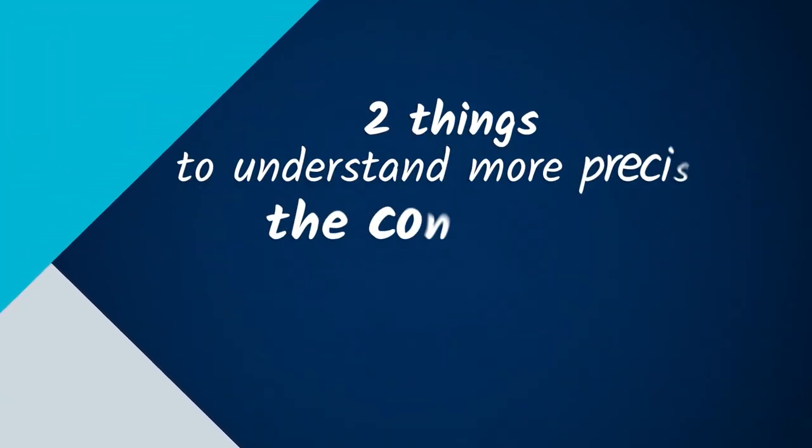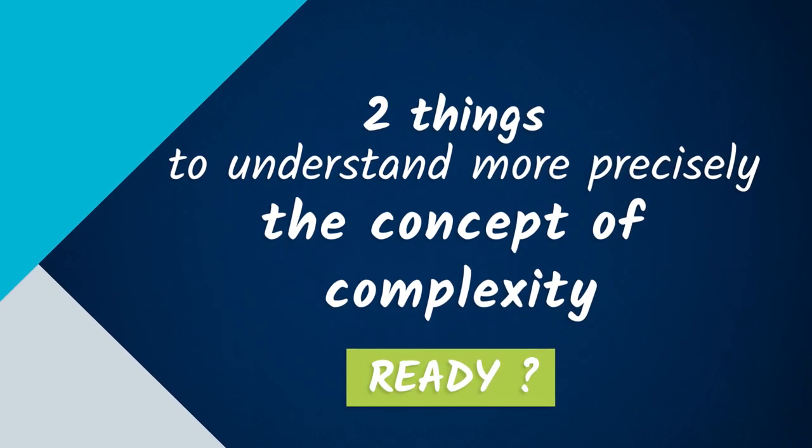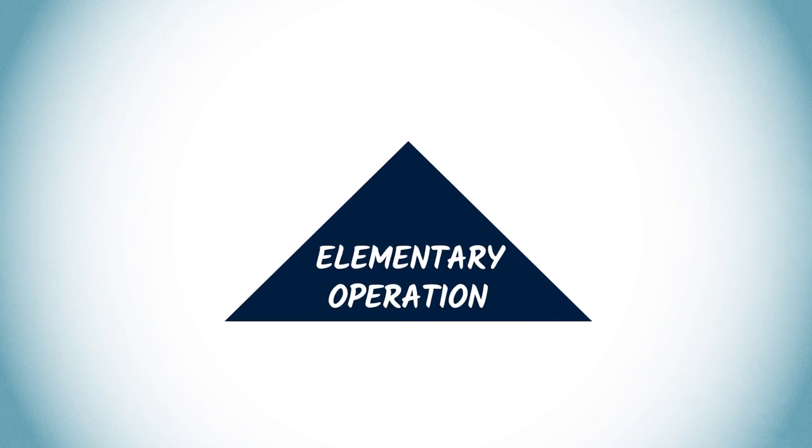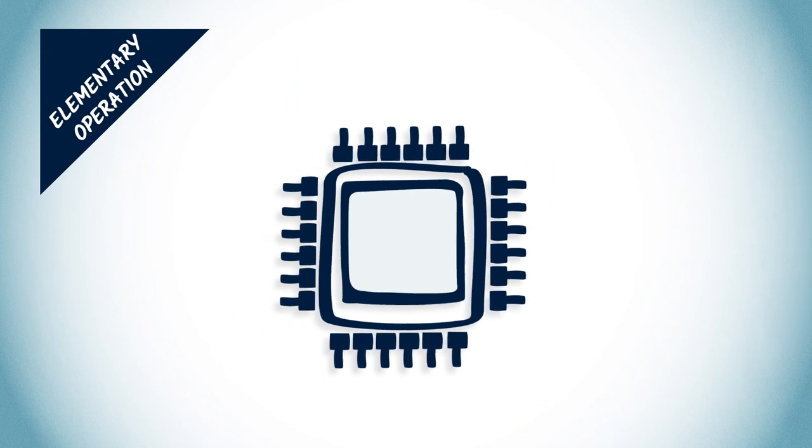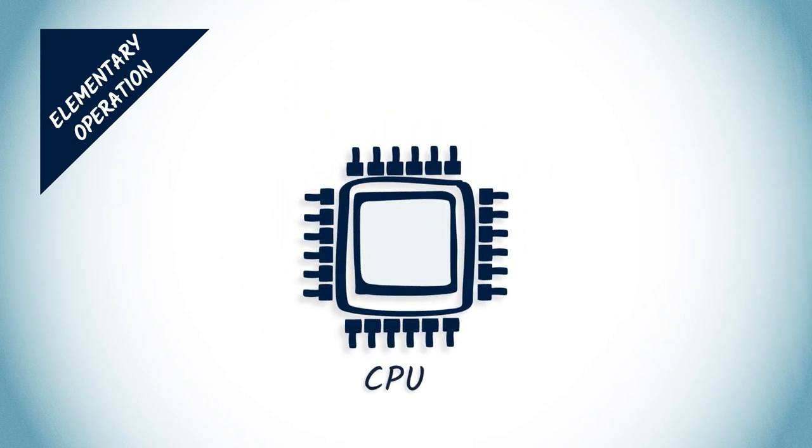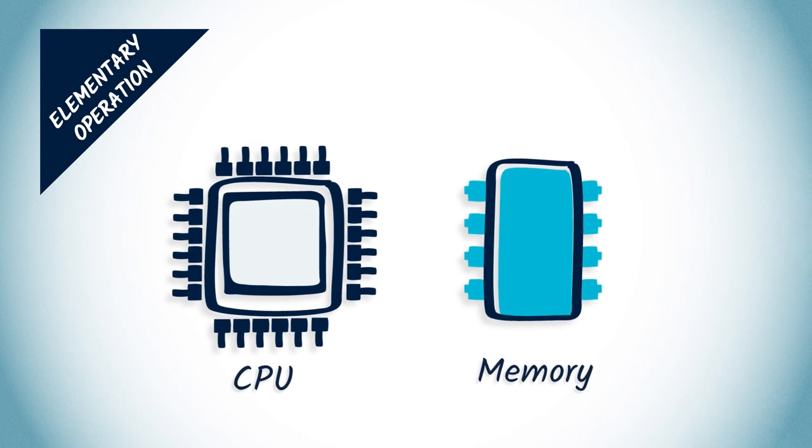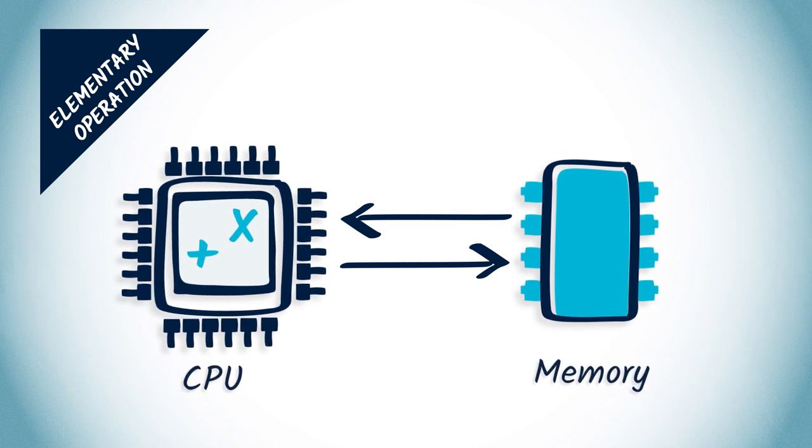To fully understand the concept of complexity, we need to define two things more precisely. An elementary operation is usually an operation that can be executed in a very short time by the CPU of the computer on which the algorithm is implemented. For example, addition, multiplication, and memory access are considered as elementary operations.